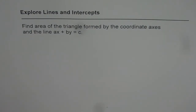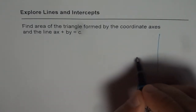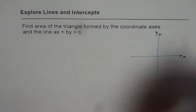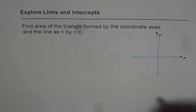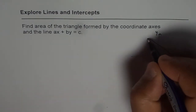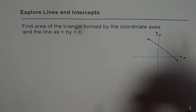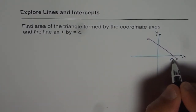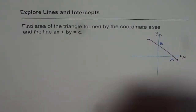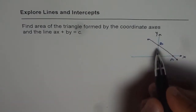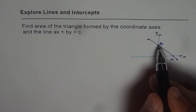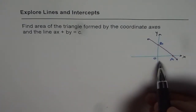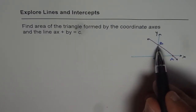Let us first understand what we are trying to do. I will sketch a coordinate axis — that is our coordinate axis with x along the horizontal and y along the vertical. We have a line ax plus by equals to c represented here. The line forms an x-intercept at point A and a y-intercept at point B. With the coordinate axis, we have a triangle formed with AB as the hypotenuse. O, the origin, forms the third vertex of this triangle — so we have triangle OAB.